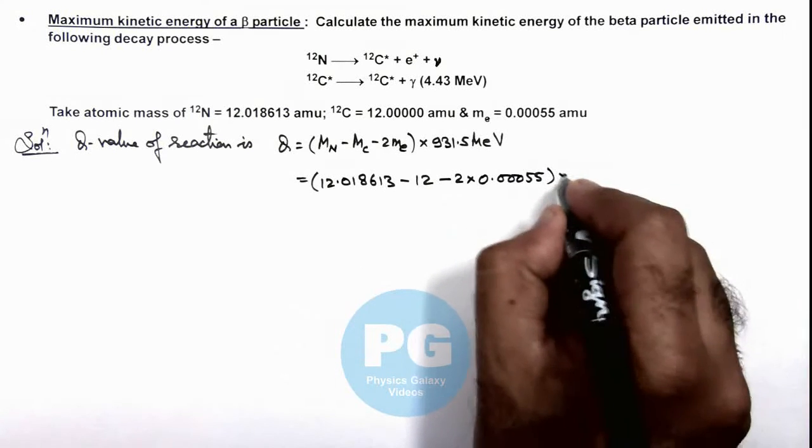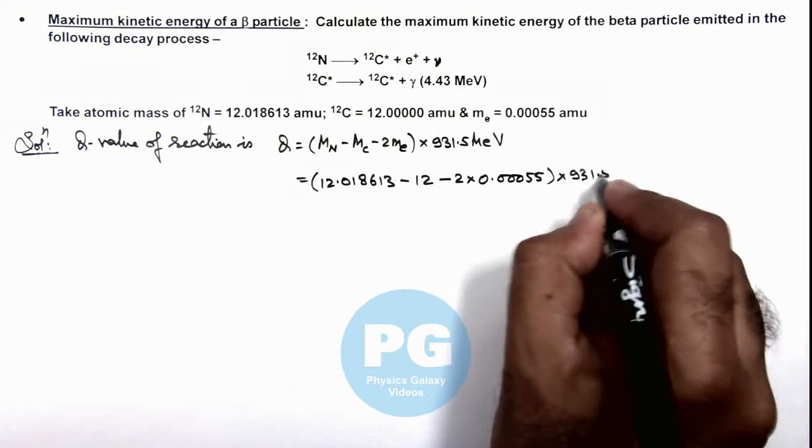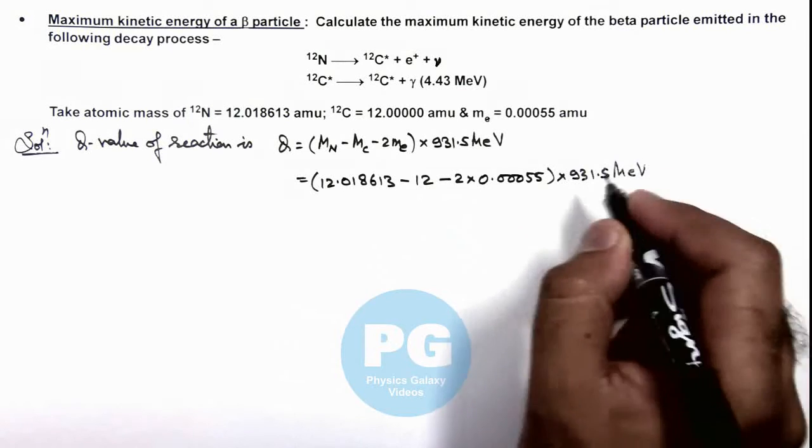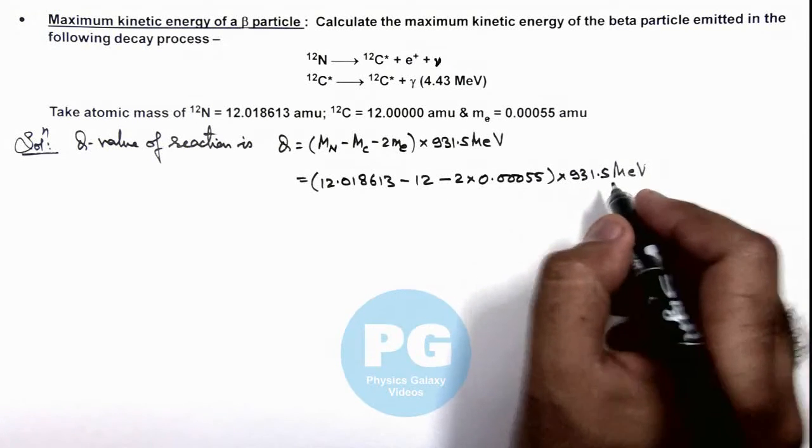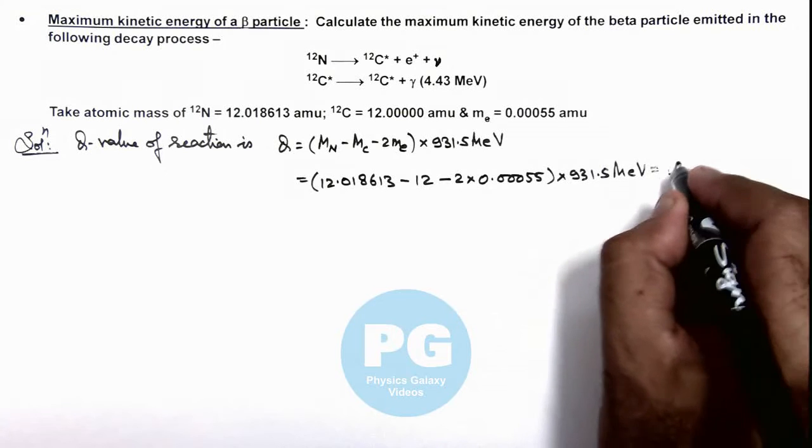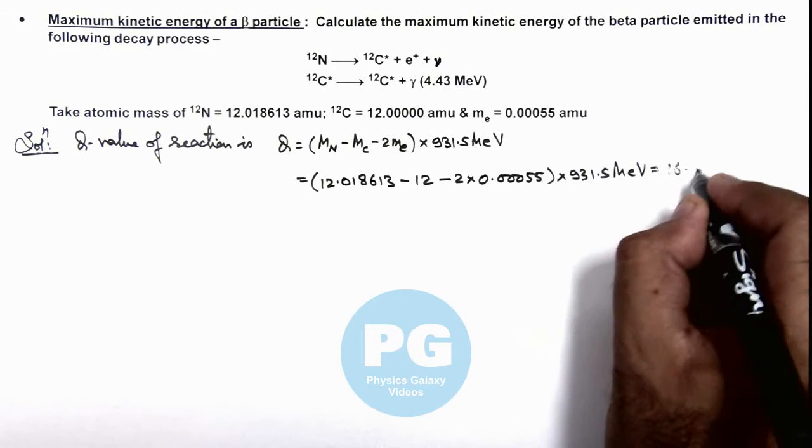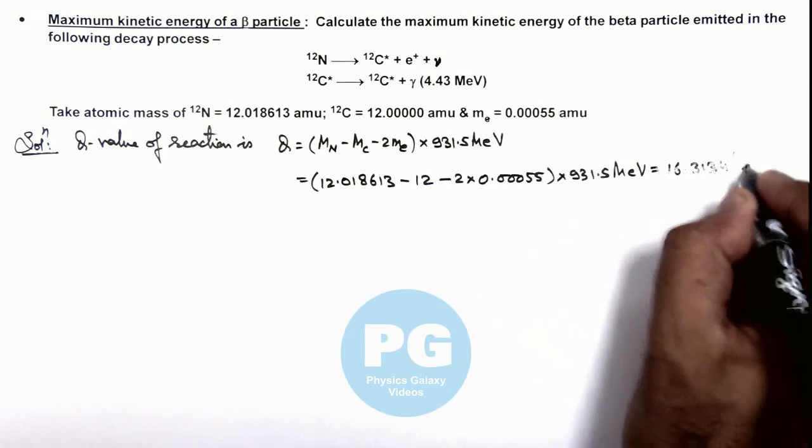If you simplify this value numerically, this comes out to be 16.3134 MeV. So this is the amount of total energy which is evolved.